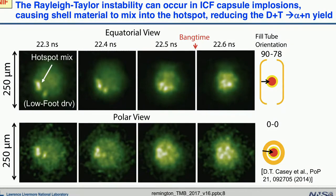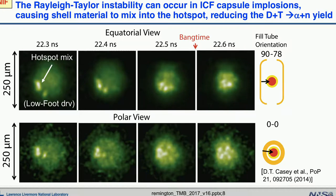Grabbing a couple of snapshots from experiments: this is an implosion experiment where the timescales vary by 100 picosecond steps — 22.3, 22.4, 22.5, and 22.6 nanoseconds. You can see the hot spot is changing in time as material from the outside is being injected in. These hot spots contain plastic material from the outer shell — CH doped with silicon or germanium — being injected into the hot spot, which is supposed to be just DT plasma. When you inject that material, it cools the hot spot, the deuterium and tritium stop fusing, and we'd like to minimize that mixing so that the nuclear yield goes up and the burn duration increases.